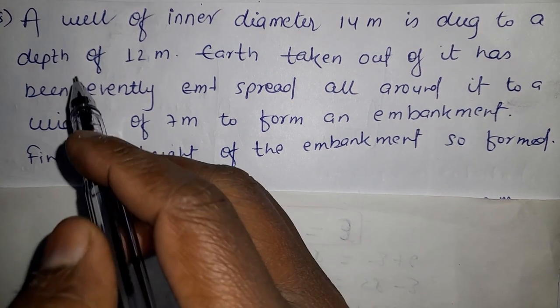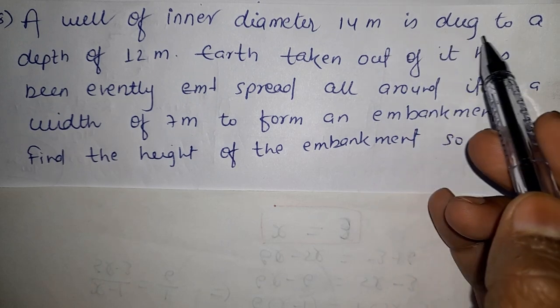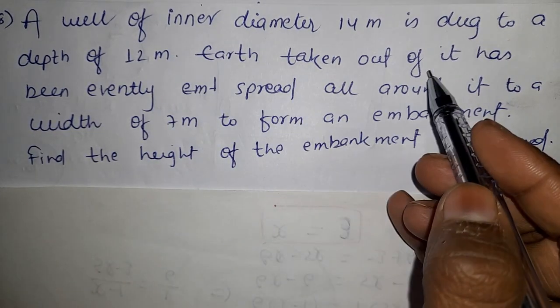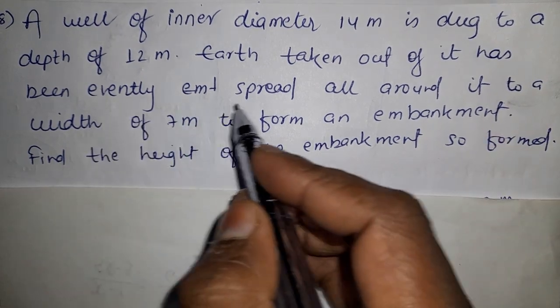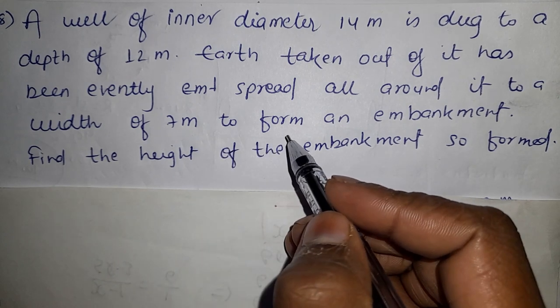Hi friends, question: A well of inner diameter 14 meters is dug to a depth of 12 meters. Earth taken out of it has been evenly spread all around it to a width of 7 meters to form an embankment.